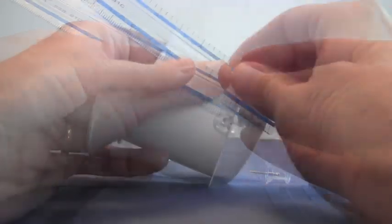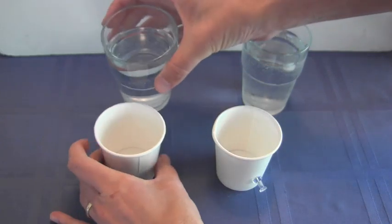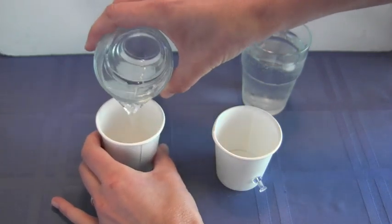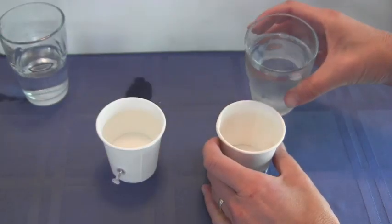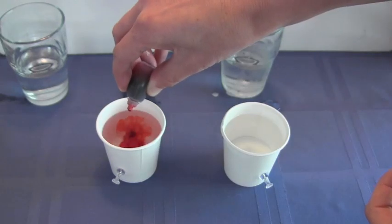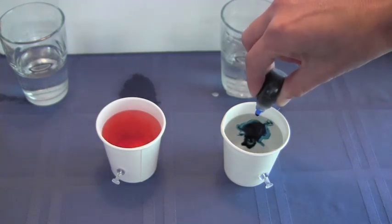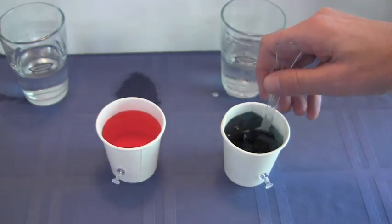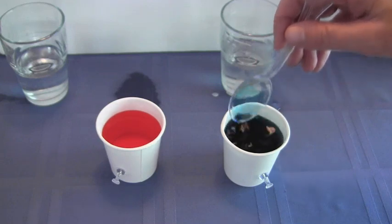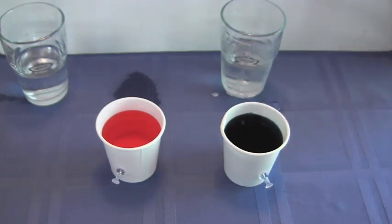We'll do the same thing with the other one. And there we have it. So here's my warm water and my cold water. I'll put some red food coloring into my warm water and some blue coloring into my cold water. Now I can use the colors to remind me that the red water is warm and the blue water is cold.